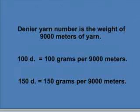For example, the denier yarn number would be the same as the weight of 9,000 meters of yarn. If the denier is 100, then the yarn weighs 100 grams for every 9,000 meters of yarn. A 150 denier yarn length of 9,000 meters would weigh 150 grams. Therefore, it's easy to see that the larger the denier, the larger the yarn.